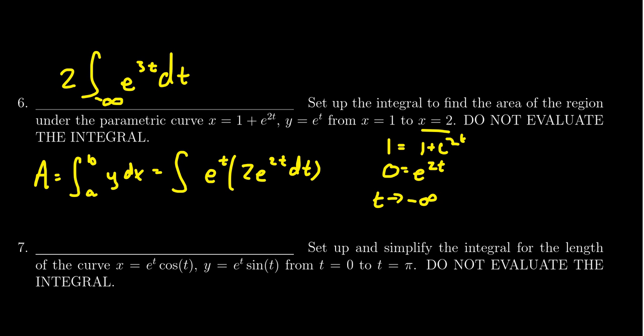And then we also want to do x equals 2. So if you plug in 2 for that one right there, 2 equals 1 plus e to the 2t. Subtract 1 from both sides, you get 1 equals e to the 2t. Taking the natural log, you're going to get 0 equals 2t. Dividing by 2, you'll get t equals 0.